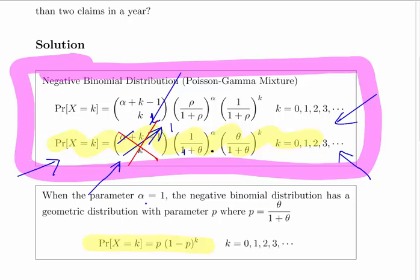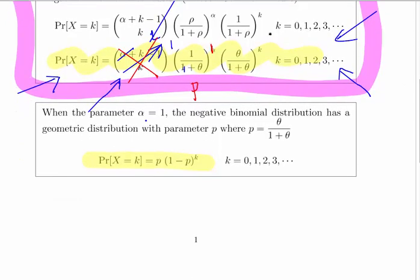The geometric parameter p is equal to 1 divided by 1 plus theta. So when the parameter alpha is equal to 1, the negative binomial distribution has a geometric distribution with parameter p, where p equals theta divided by 1 plus theta.